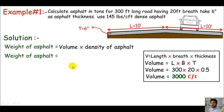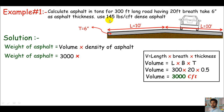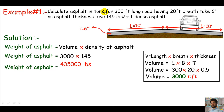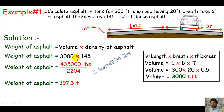The volume equals 3,000 cubic feet. Now the weight of asphalt equals volume times density: 3,000 times 145 equals 435,000 pounds. Since the example asks for asphalt in tons, we divide by 2,204 because one ton equals 2,204 pounds. The weight of asphalt comes out to 197.3 tons. This is our answer and we have done it.